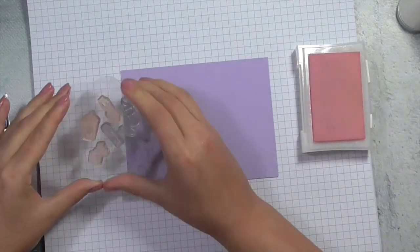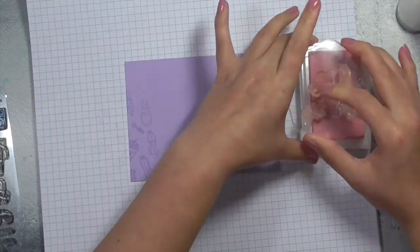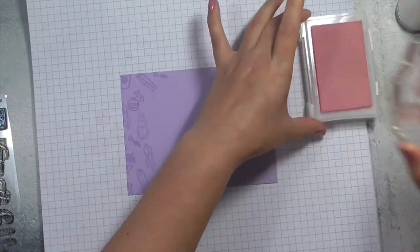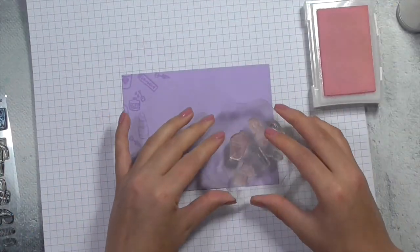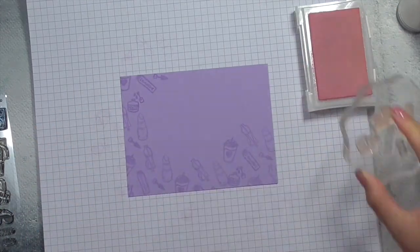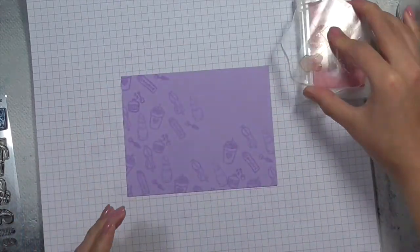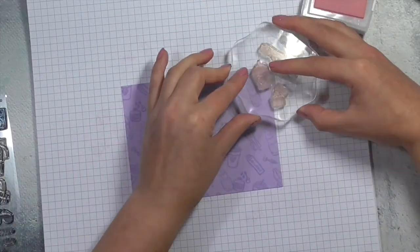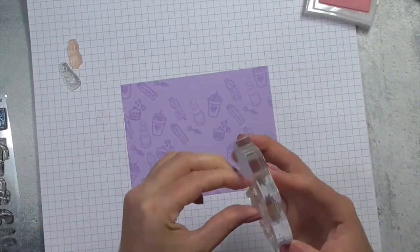This is actually not Versamark, this is embossing ink and it's a tinted ink. The reason that I'm using this is just so you can see what I'm doing as I'm stamping, and as you can see I'm just sort of working my way around the card filling in any of the gaps and essentially just creating a patterned piece of paper.